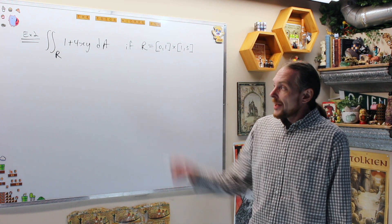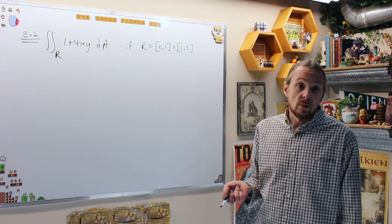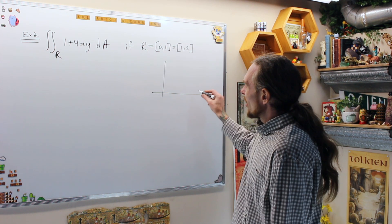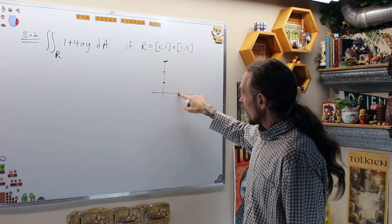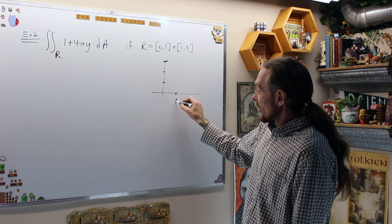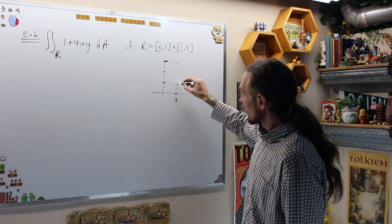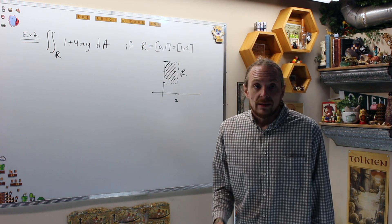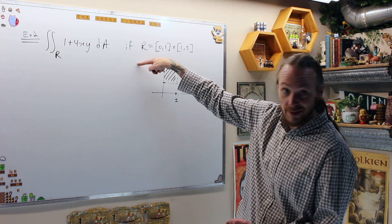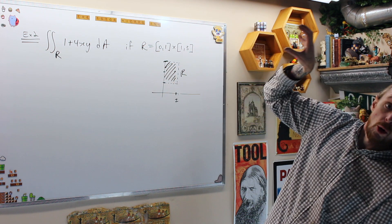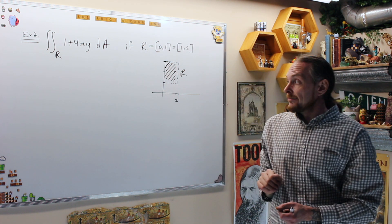Let's do one more example. Compute the double integral of 1 + 4xy over the rectangle R = [0,1] cross [1,3]. Drawing this: x goes from 0 to 1, y goes from 1 to 3. That's our rectangle R. In 3D, the region is over this rectangle and the surface 1 + 4xy comes out above it — we're computing the volume of that solid.